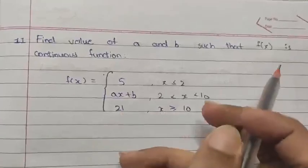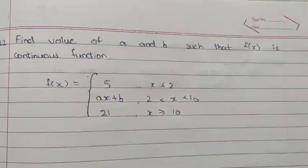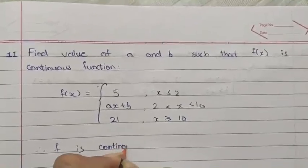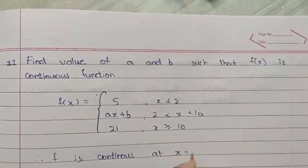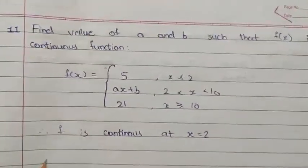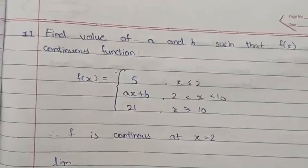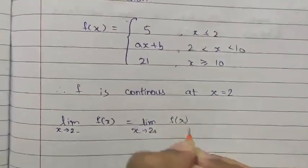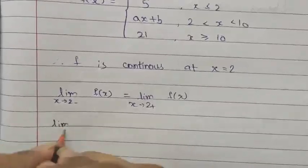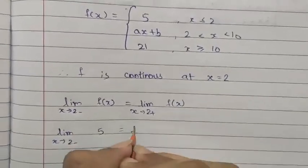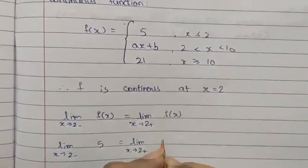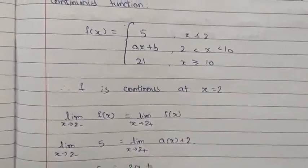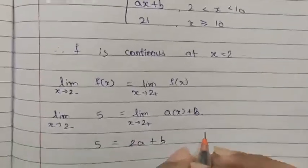Find the values of a and b such that f is a continuous function. Since f is continuous, f is continuous at x equals 2. For continuity at x equals 2, the limit as x tends to 2 minus of f must equal the limit as x tends to 2 plus of f. Equating both: 5 equals 2a plus b. Let this be equation 1.